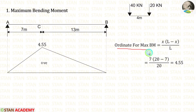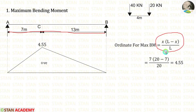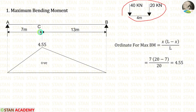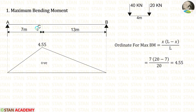First let us calculate the maximum bending moment. We know the formula for the ordinate for maximum bending moment: x(L − x)/L. Here x = 7 m and the total length L = 20 m. Applying the values, we get 4.55. We have to keep one of the loads at point C, but which load should we keep at point C? We can apply a formula to find out which load is the critical one.